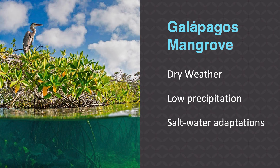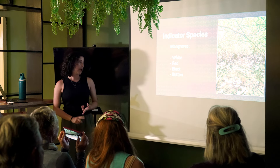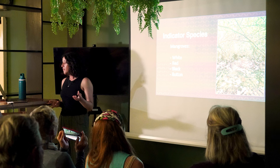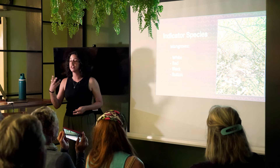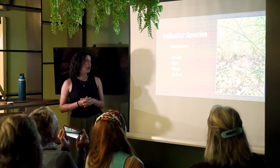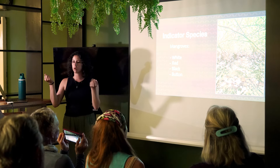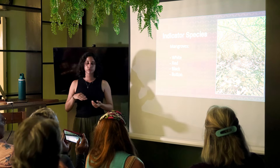There are four different species of Galapagos mangroves: white, red, black, and button. They are halophytic — able to grow in salt water. The black mangrove has above-ground roots that allow it to breathe. The white mangrove exudes salt water from its leaves, leaving salt crystals, allowing it to grow in the coastal area.